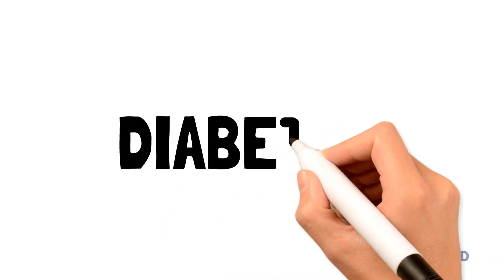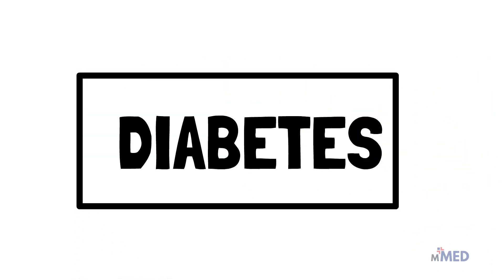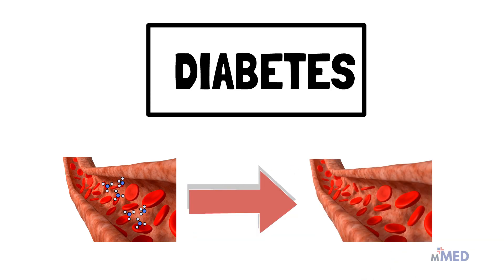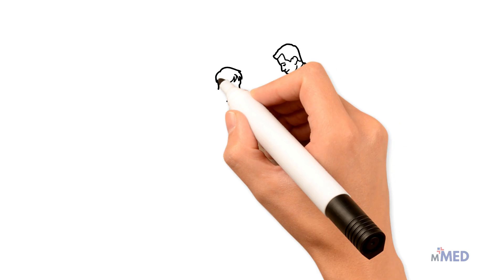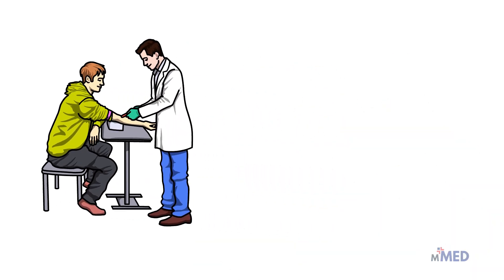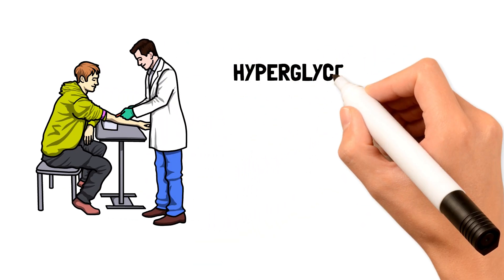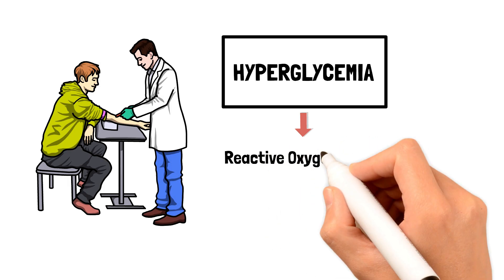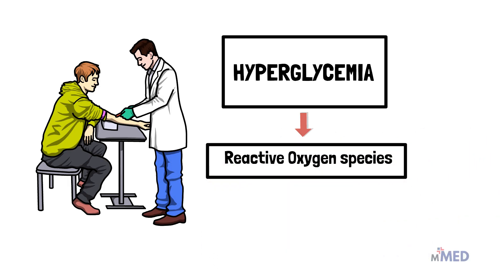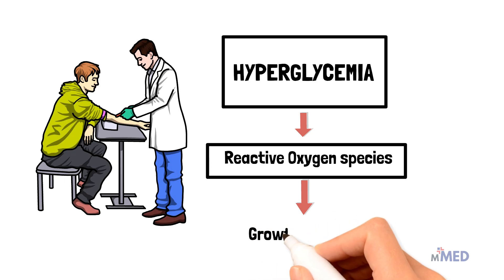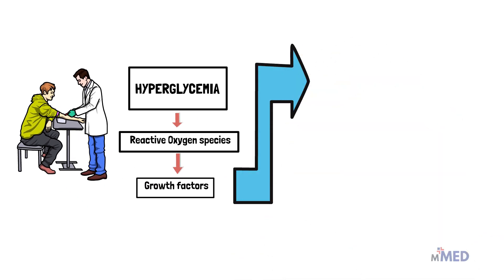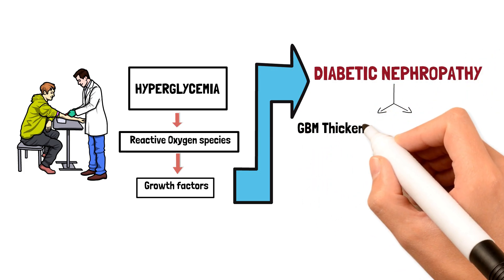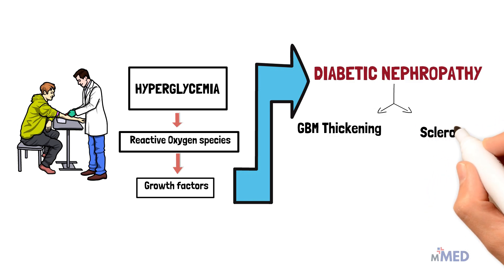In diabetes, chronic high blood glucose levels damage tiny blood vessels in the kidneys, affecting their function and causing further kidney damage. Diabetes is a condition where you have high blood glucose, or hyperglycemia. High blood glucose leads to overproduction of reactive oxygen species, or ROS, and the production of unnecessary growth factors. All of this leads to the most important complication of diabetes — diabetic nephropathy — which causes glomerular basement membrane thickening and sclerosis in the nephron.